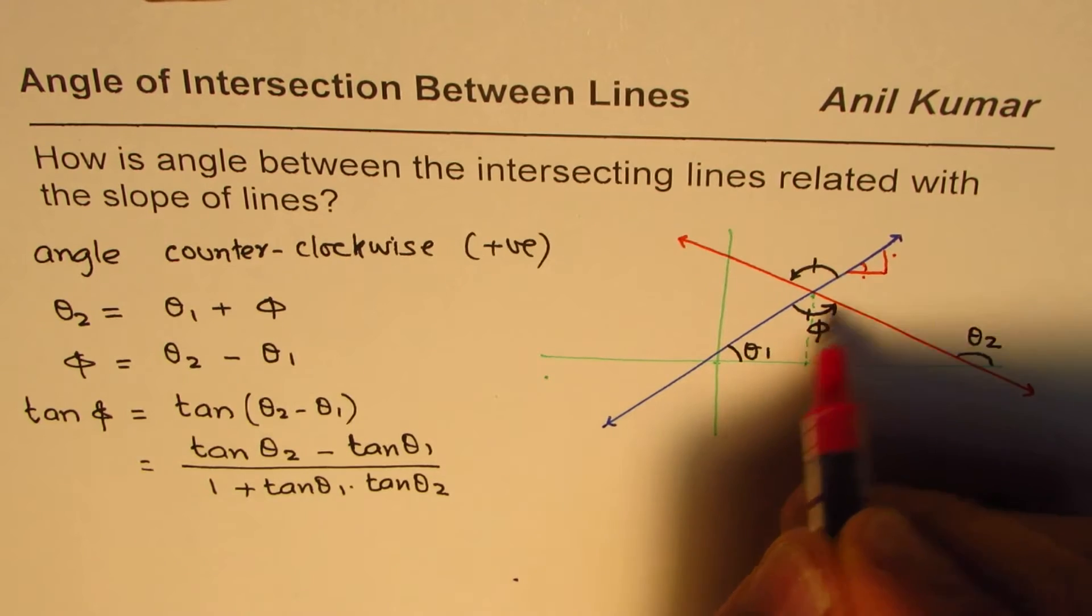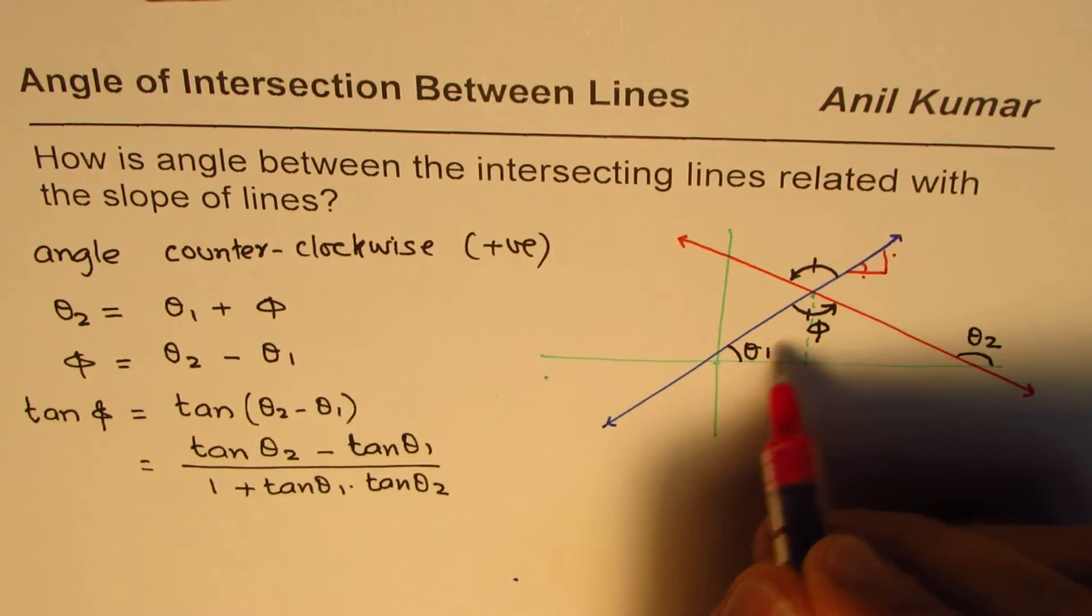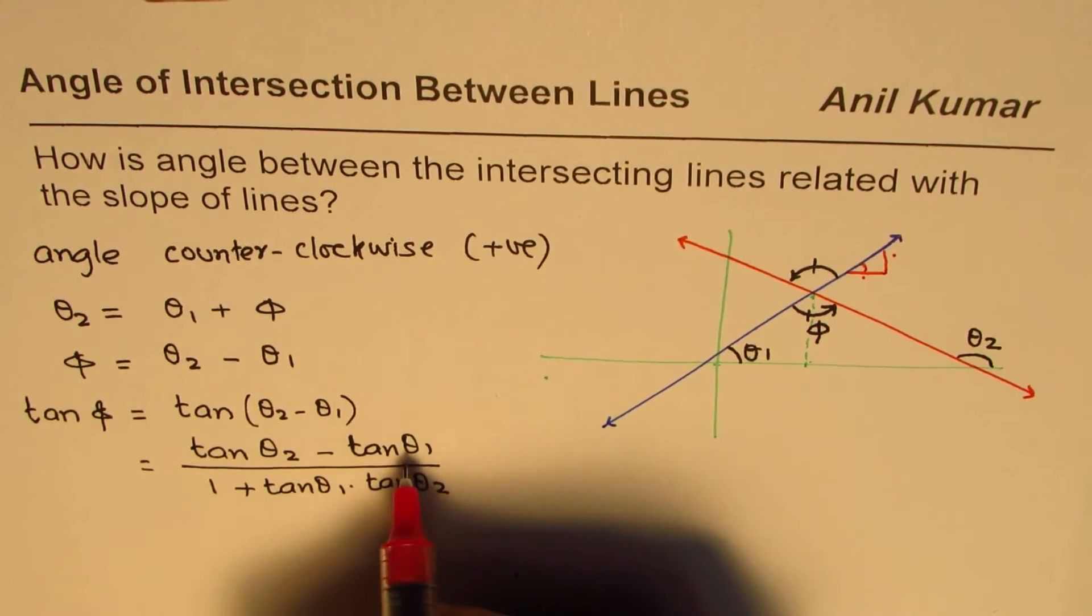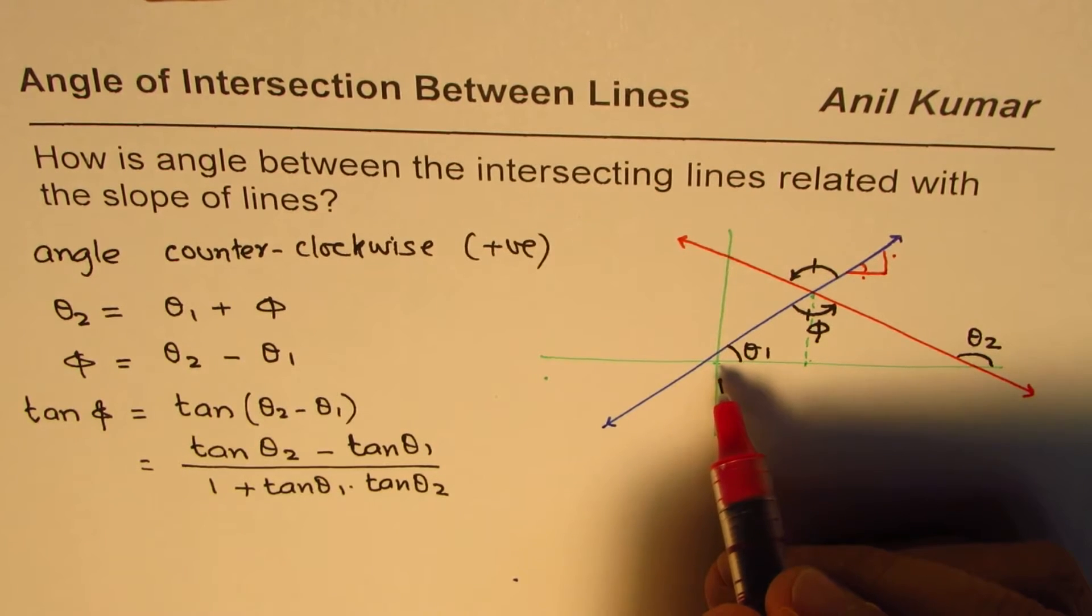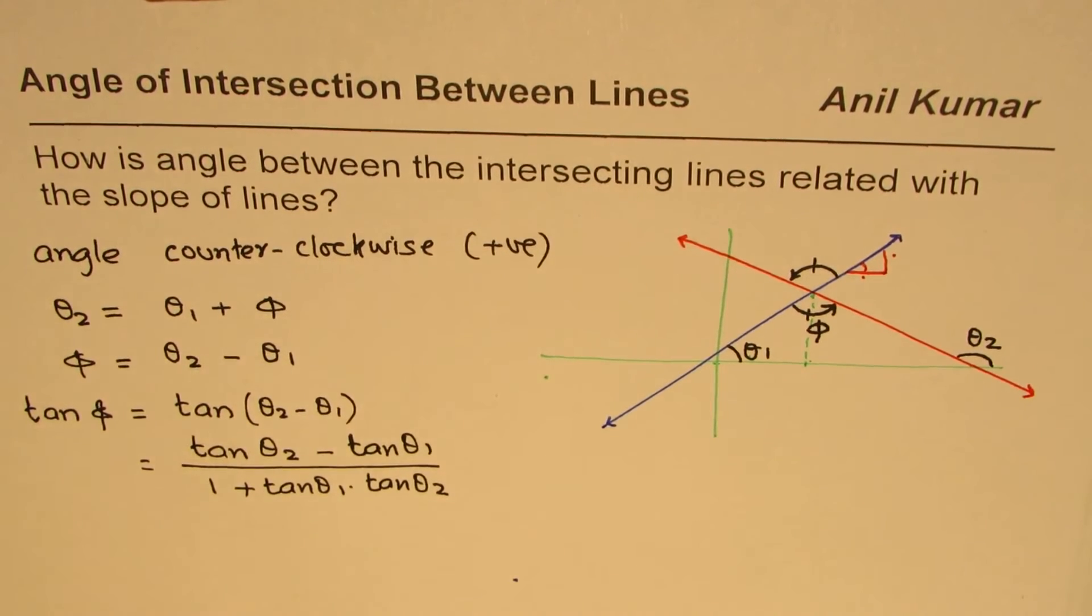So that angle theta 1 is this angle and tan is rise over run. So it becomes the slope, tan theta 1 is slope of the line. So that is the slope of the line.